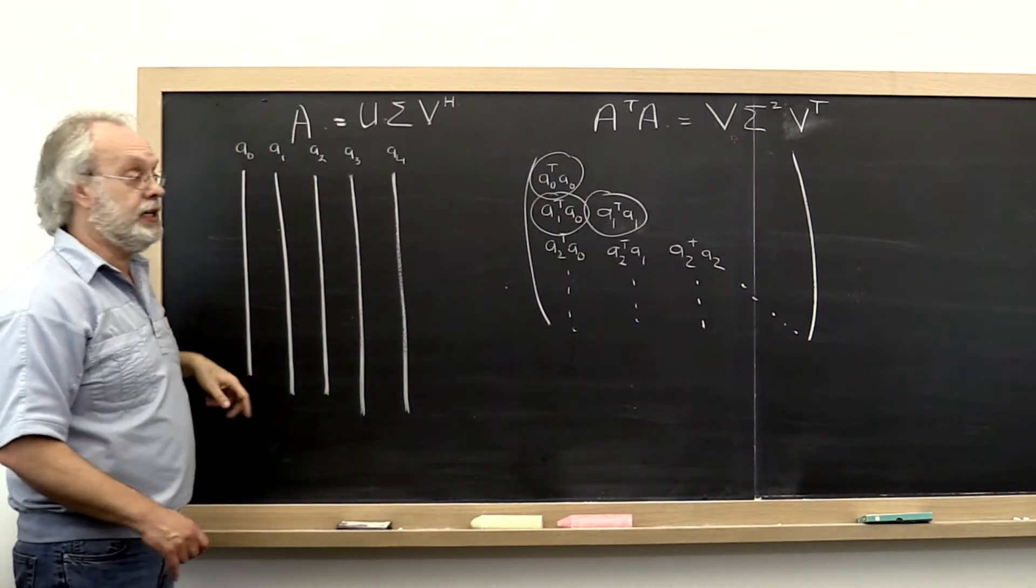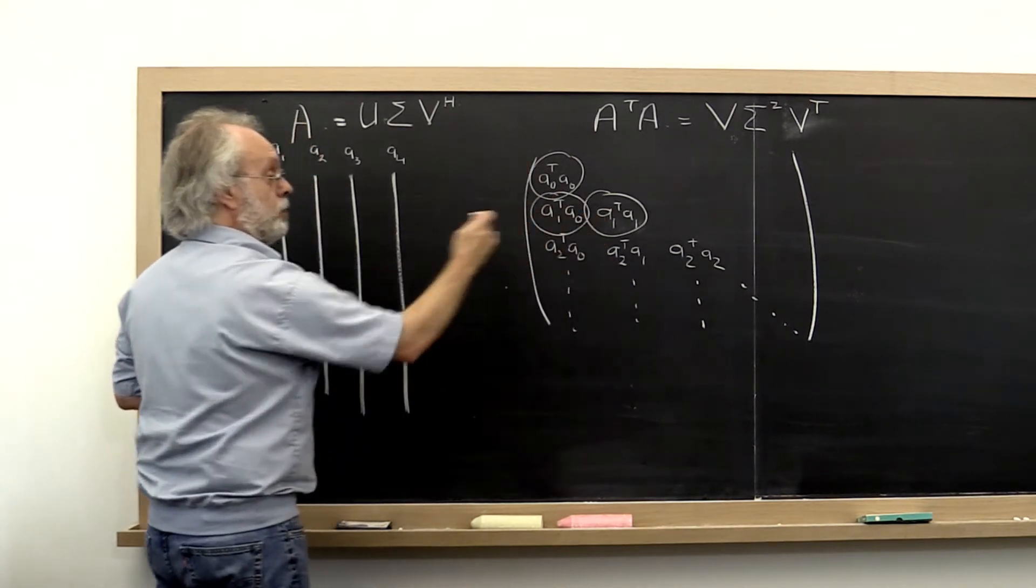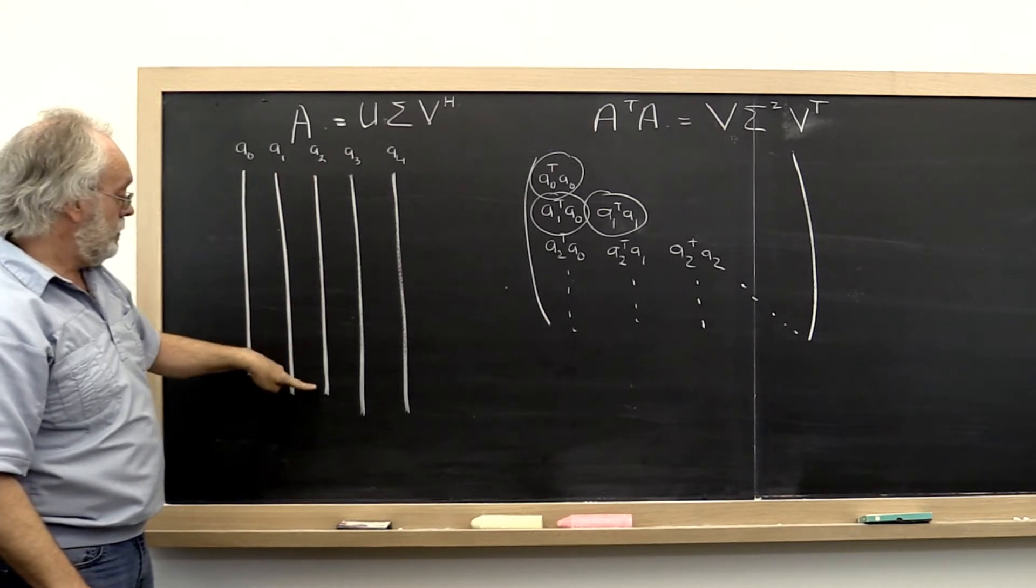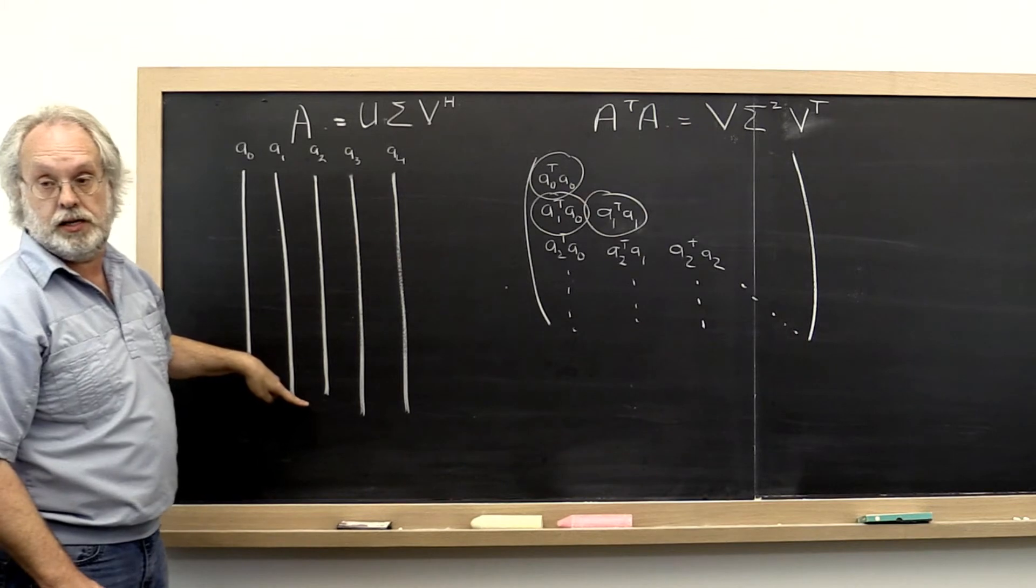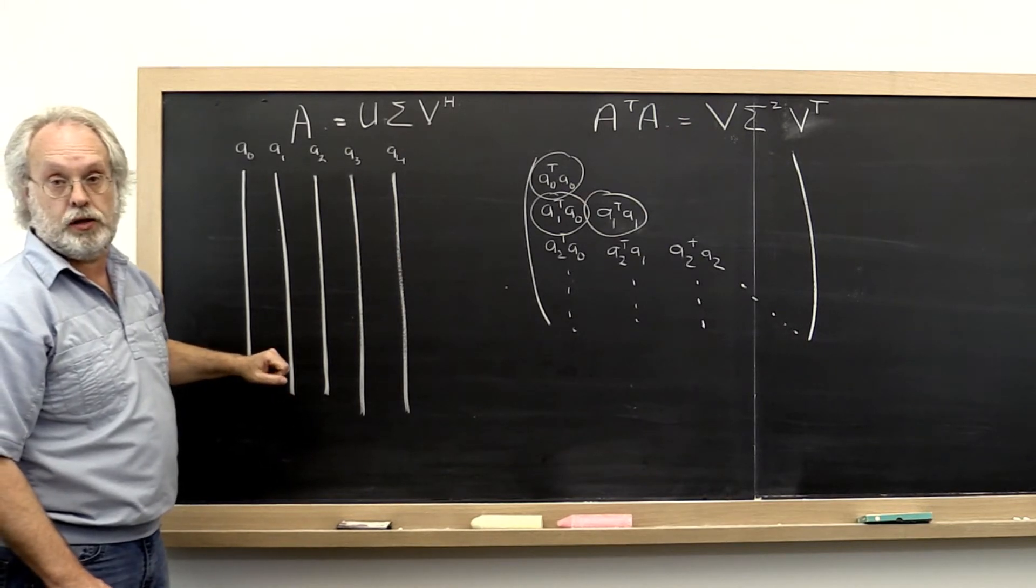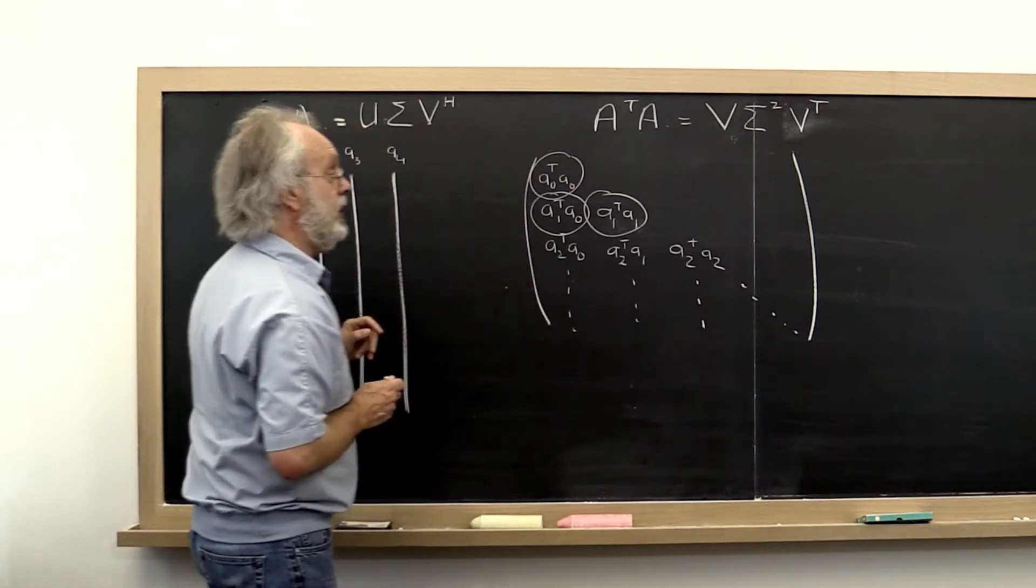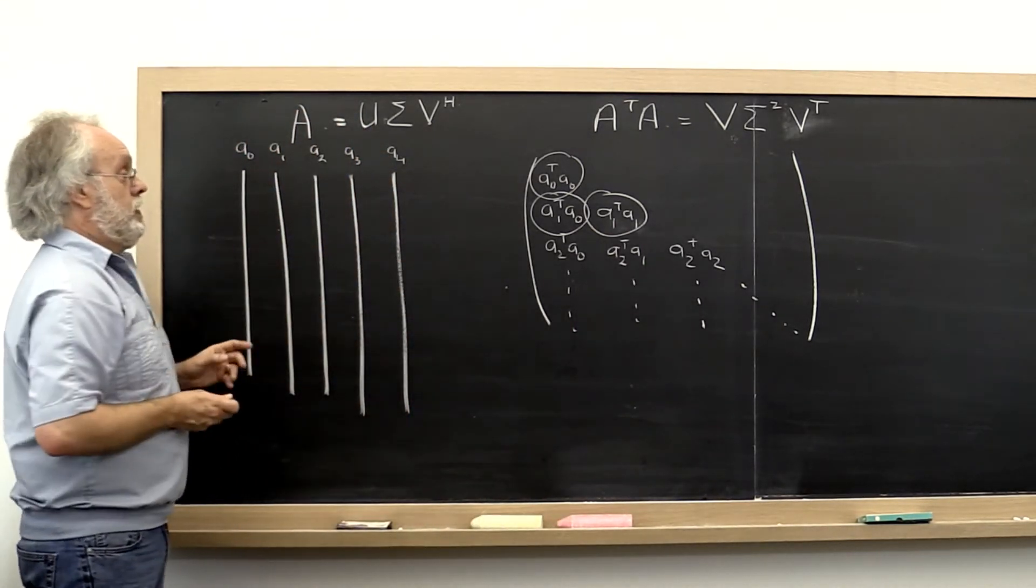And then take that Jacobi rotation and apply it to the two columns from which these entries were computed. And then you move on to the next entry and you compute the appropriate three entries there. And what that would mean is that you then apply those Jacobi rotations to these two columns and so forth. And with that you can do an entire sweep of A transpose A, which then translates into a sweep on A.